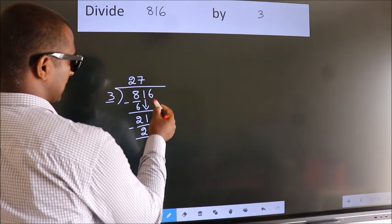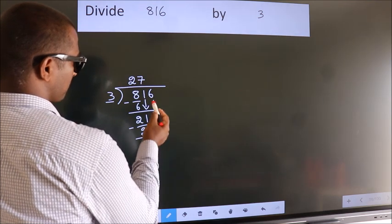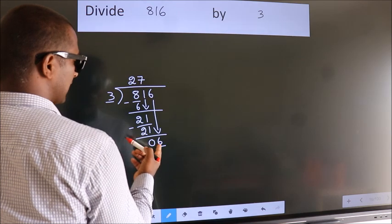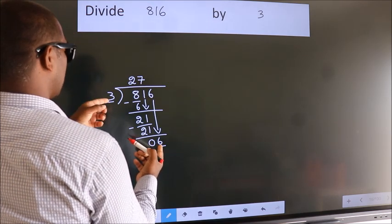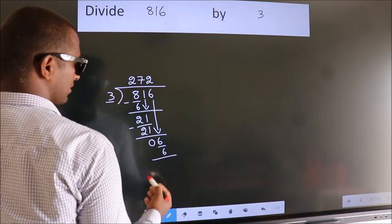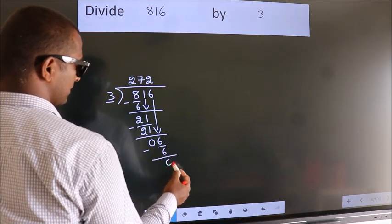After this, bring down the beside number. So, 6 down. So, 6. When do we get 6 in 3 table? 3 2s, 6. Now, we subtract. We get 0.